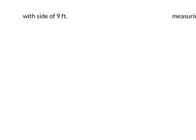We want to find the area of a square with a side of nine feet. Drawing the picture, each side is nine feet. To find the area, we use A equals s squared, or s times s. Plugging in, we get nine times nine equals 81. We attach our units, and since this is area, it is square units, so A equals 81 feet squared.